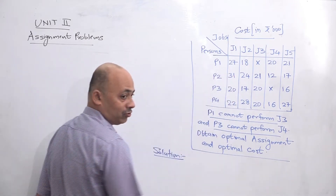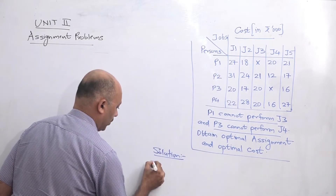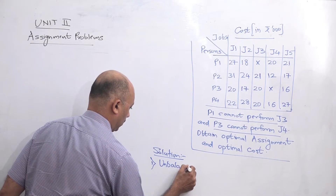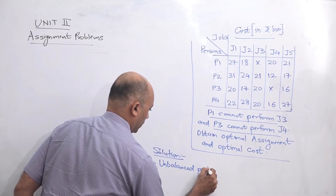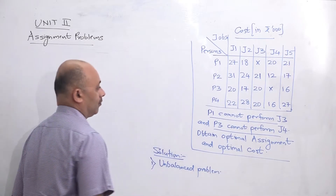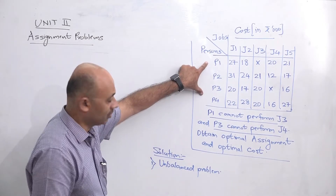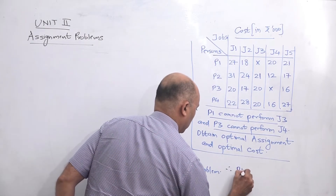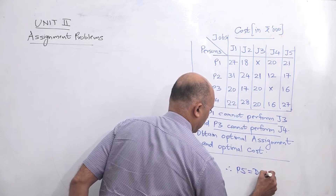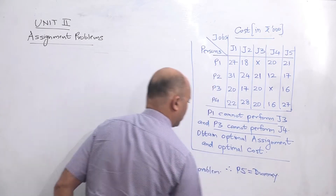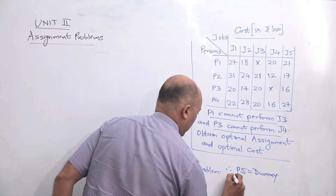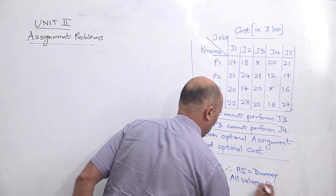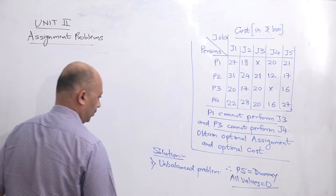There are four persons and five jobs, so this is an unbalanced problem. We need to take a dummy for balancing. Since one person is short, we will take P5 as dummy. For P5, all values will be zero. This is point number one.